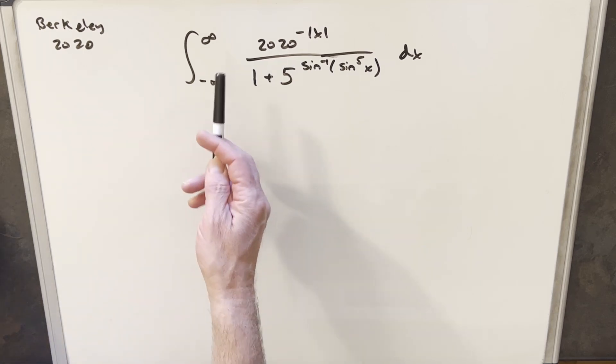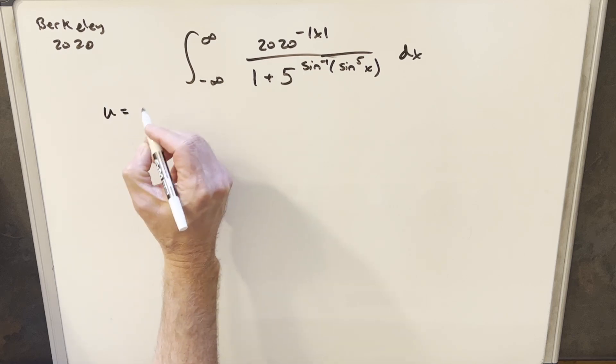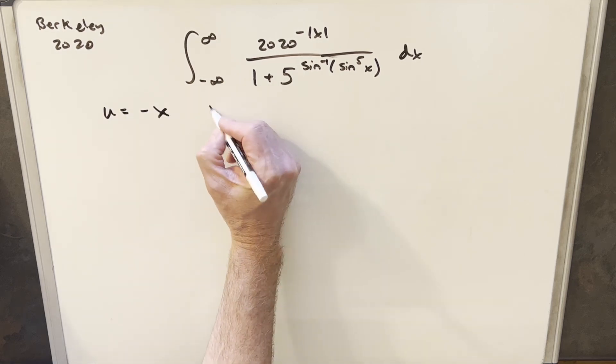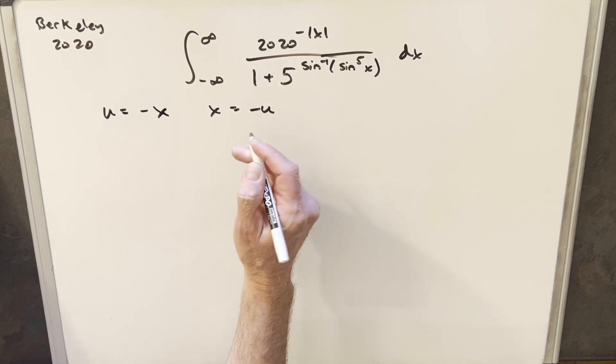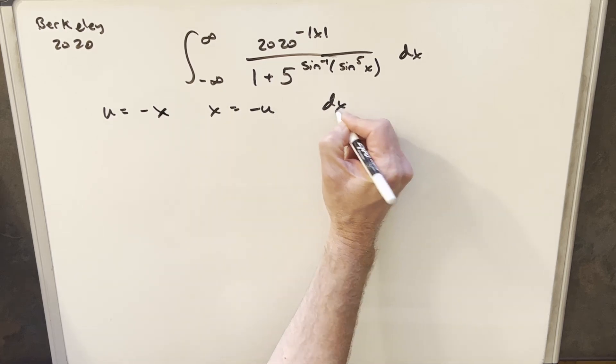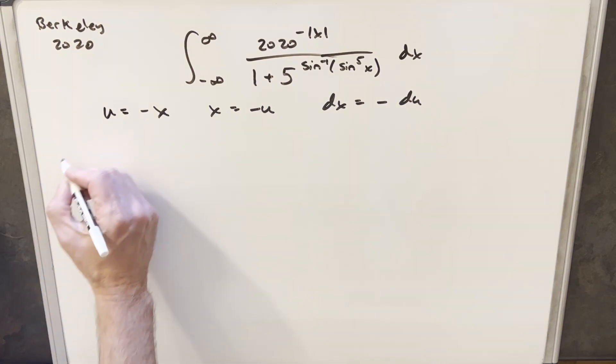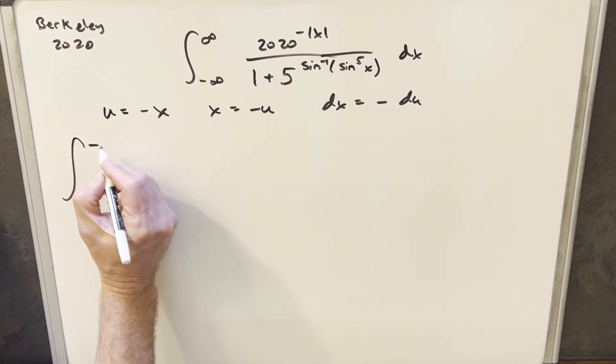So the first thing I want to do is just use this symmetry, and I'm going to make a substitution. We're going to have our substitution be u equal to minus x. Then that means that x is minus u, and we'll take our derivative, and we have dx is minus du.